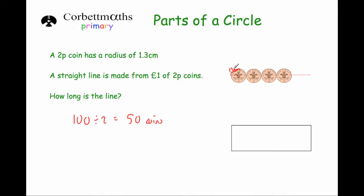Now, we know the radius is 1.3. So we know halfway across is 1.3 centimeters. So if we do 1.3 plus 1.3, we'll find the distance across, the diameter of one of the 2p coins. So 1.3 plus 1.3 would be 2.6 centimeters.